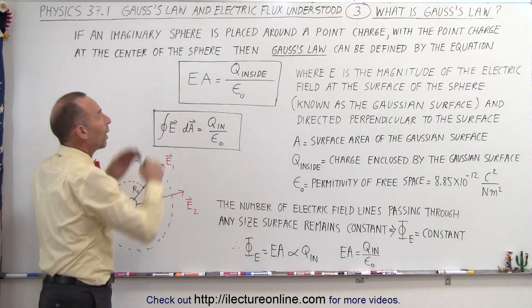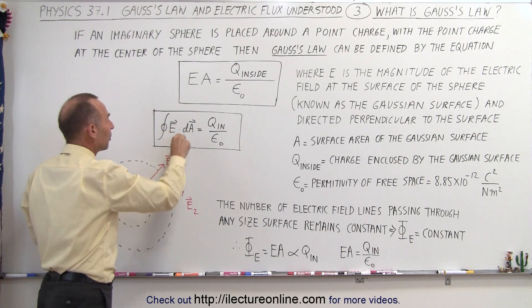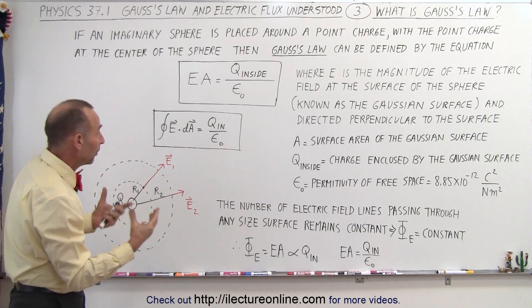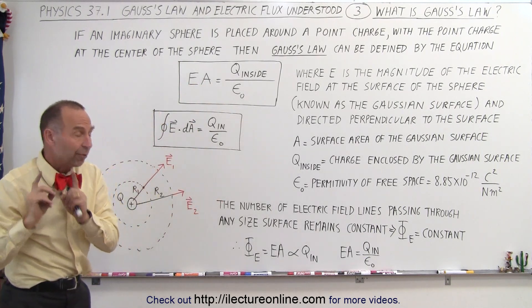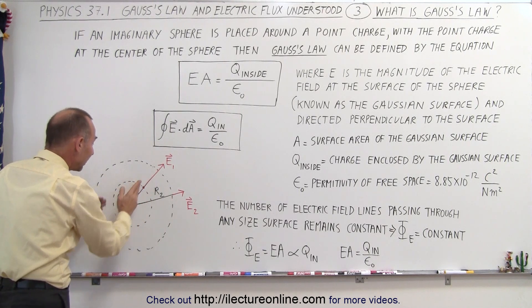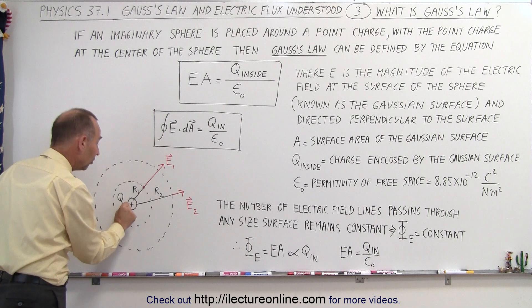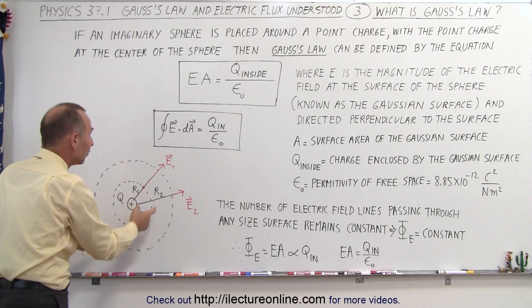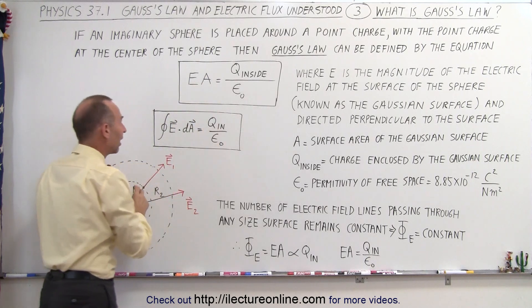Sometimes Gauss's Law cannot be written quite that simply. Sometimes it's written in integral format, where we integrate the electric field dotted — this is a dot product — with a small area element, and that equals the charge inside divided by epsilon sub nought. Typically for our purposes, this integral will end up being the magnitude of the electric field times the area, provided the charge is placed right inside the Gaussian surface at the center, and the electric field points perpendicular to the surface everywhere. Then the equation simplifies to: the magnitude of the electric field times the size of the Gaussian surface equals Q inside divided by epsilon sub nought.